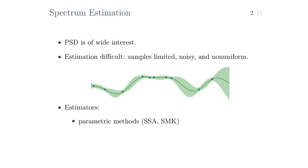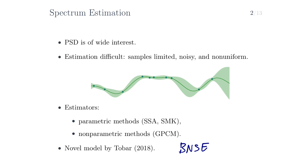The second category of estimators are non-parametric methods that don't make any assumptions about structure, like the fast Fourier transform. We also have seen a modern example of this category, that is the Gaussian process convolution model, which induces a non-parametric prior over PSDs through a cleverly transformed Gaussian process. In this topic, we will be discussing a novel model for spectrum estimation, recently introduced by Philippe Tobar, called Bayesian non-parametric spectral estimation, abbreviated BNSE.